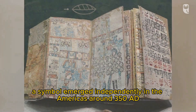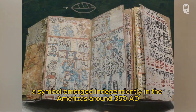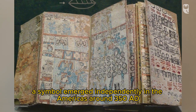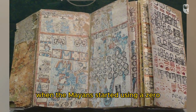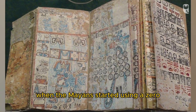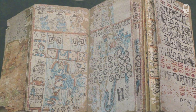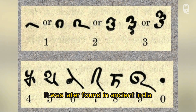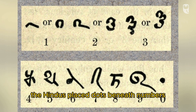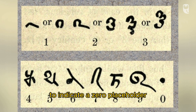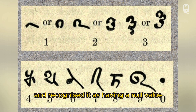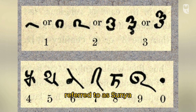A symbol emerged independently in the Americas around 350 AD, when the Mayans started using a zero marker in their calendars. It was later found in ancient India in the mid-5th century. The Hindus placed dots beneath numbers to indicate a zero placeholder, and recognized it as having a null value, referred to as Sunya.